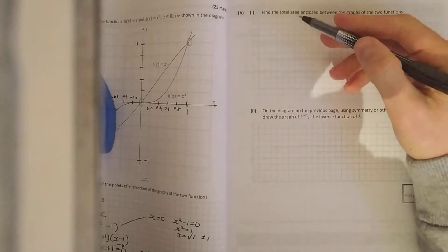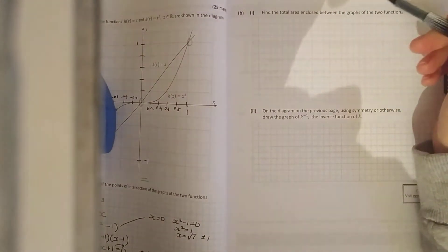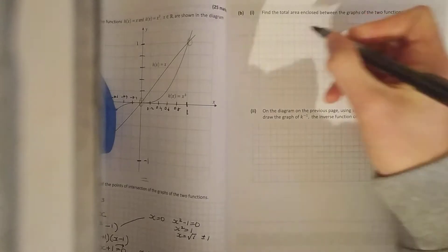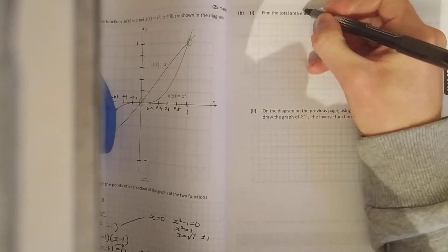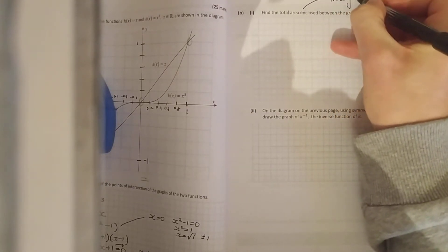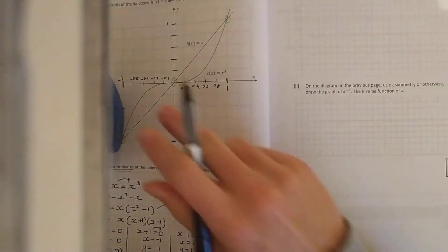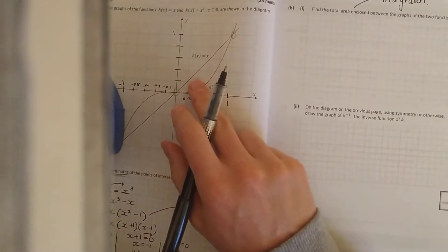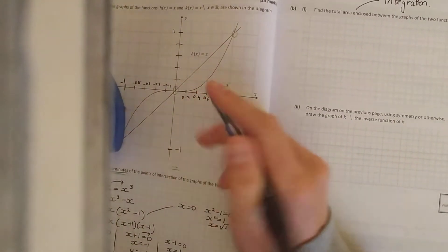Find the total area enclosed by the graphs. The total area between graphs. What you're using is integration, so you'll do that after calculus. So what you're doing is find the area of the upper curve which is your h(x), your x, and your area of the lower curve.